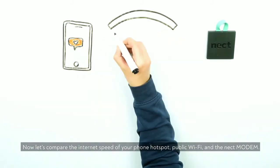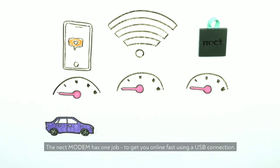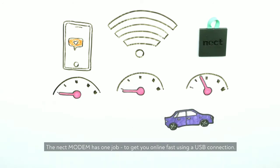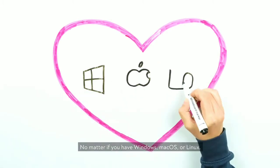Now let's compare the internet speed of your phone hotspot, public Wi-Fi, and the necked modem. The difference is significant. The necked modem has one job: to get you online fast using a USB connection.